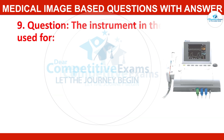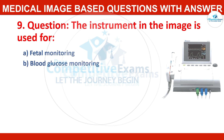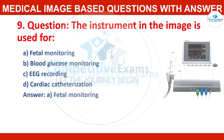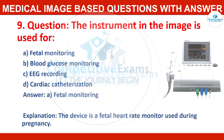Question number nine: the instrument in the image is used for — options: fetal monitoring, blood glucose monitoring, EEG recording, or cardiac catheterization? Correct answer: fetal monitoring. The device is a fetal heart rate monitor, used during pregnancy.